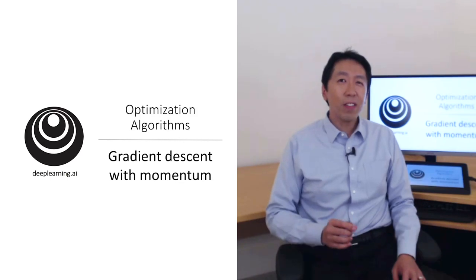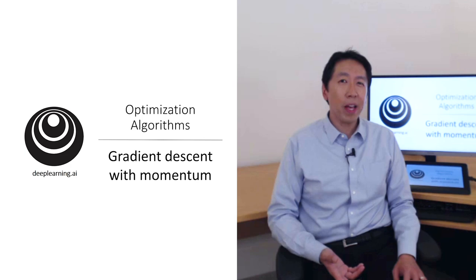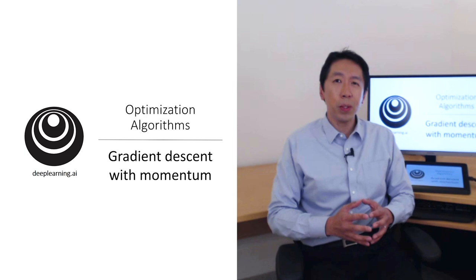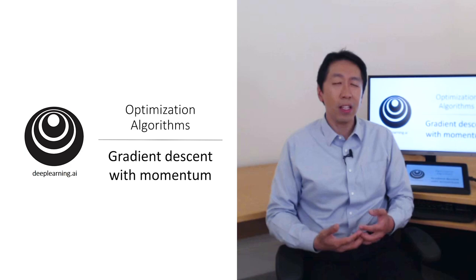There's an algorithm called momentum, or gradient descent with momentum, that almost always works faster than the standard gradient descent algorithm. In one sentence, the basic idea is to compute an exponentially weighted average of your gradients, and then use that gradient to update your weights instead. In this video, let's unpack that one sentence description and see how you can actually implement this.